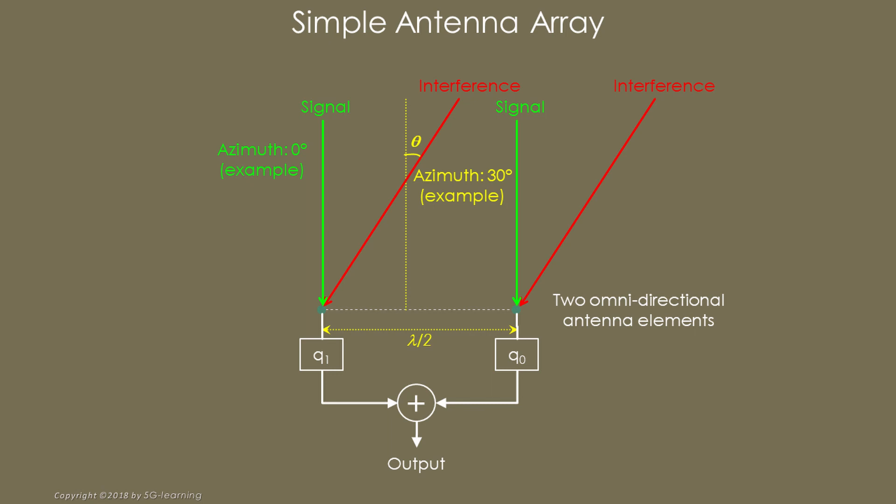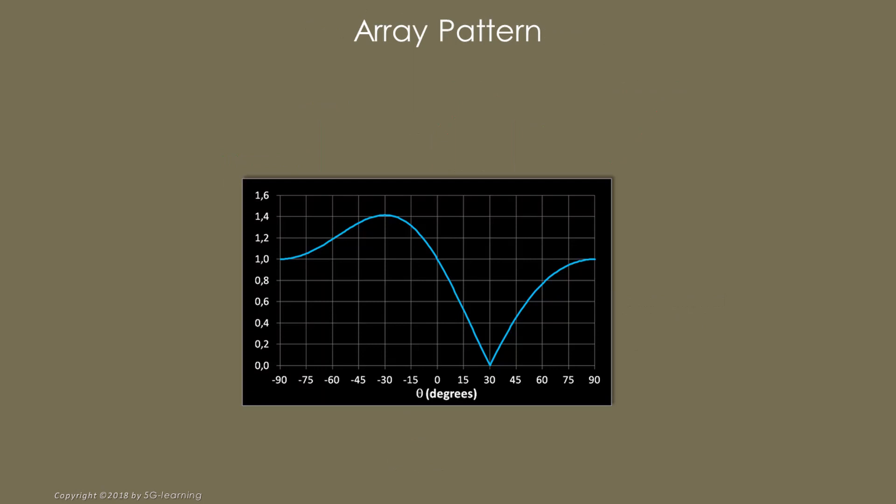Suppose that at the same time another electromagnetic wave arrives at the array. This is the unwanted signal coming from another station. Let's suppose that its angle of arrival is 30 degrees. It is possible to select q0 and q1 in order to receive the intended signal while at the same time suppressing the influence from the interference source. This picture shows the array response as a function of the incoming wave angle, the azimuth. We observe that the signal arriving from 0 degrees azimuth is not attenuated. Its gain equals 1.